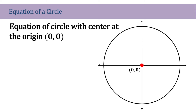Now let's write the equation of this circle with the center at the origin. To do that, we need to select a specific point on this circle and we will name this (x, y). That is the coordinate that corresponds with the location of that point on the Cartesian plane. It could be a point here, a point here, a point here — it doesn't matter as long as we have a reference point.